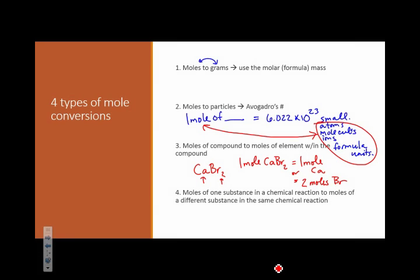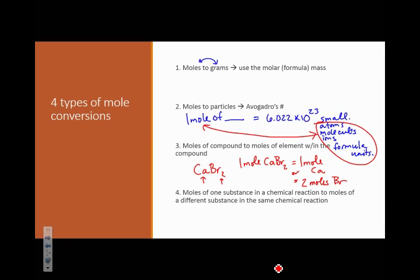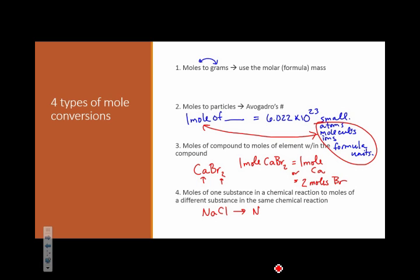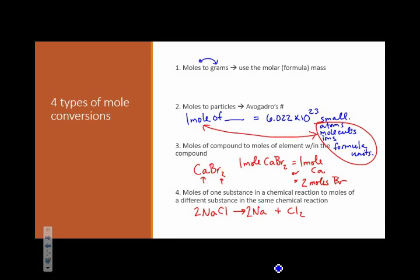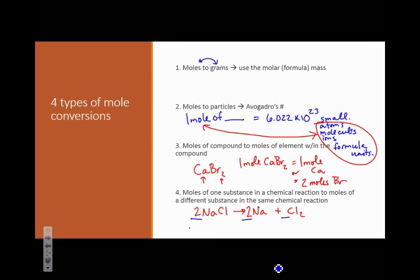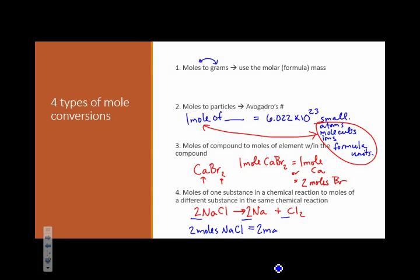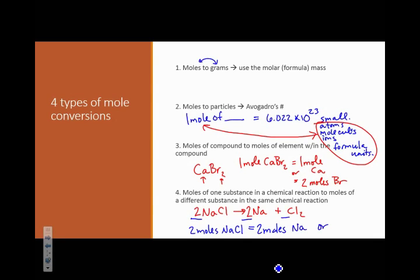The last type of mole conversion is going to be referenced to a chemical reaction. And in this case, it would be something like, let's say, 2NaCl decomposes into 2Na plus Cl2. This type of conversion is going to use these coefficients in the balanced chemical reaction as mole conversions. So this will be two moles of NaCl equal two moles of Na or one mole of Cl2. So we can relate this to this or this to this or this to this.